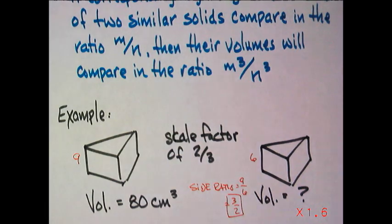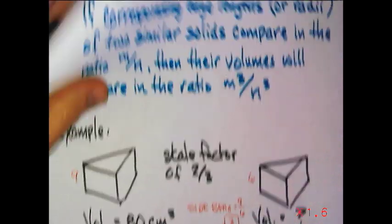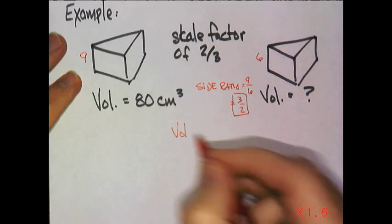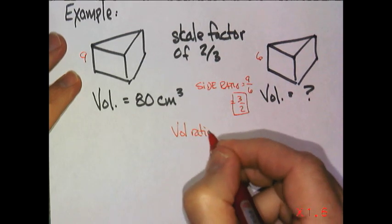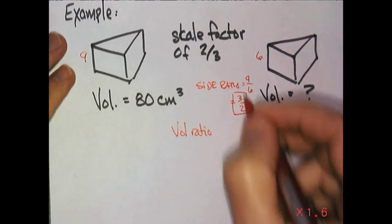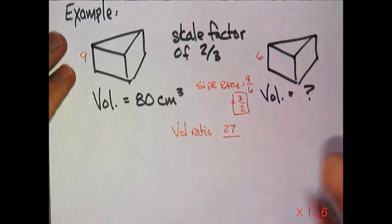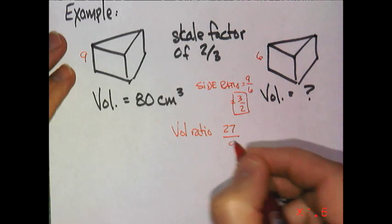The volume ratio would have to be, using our conjecture, would be three cubed compared to two cubed. So, the volume ratio is 27 to two times two times two,